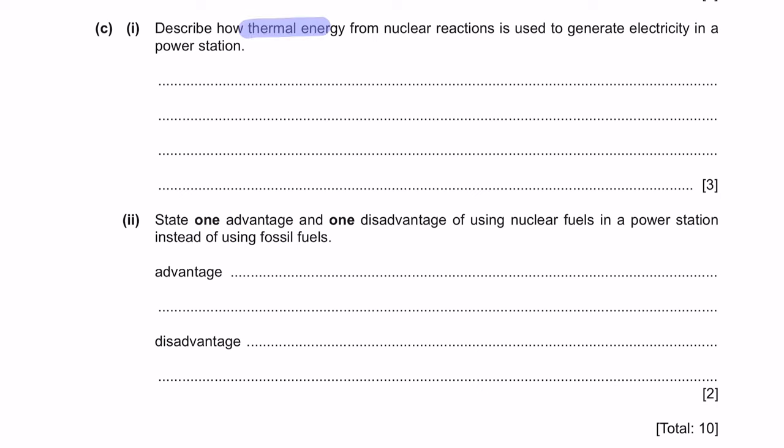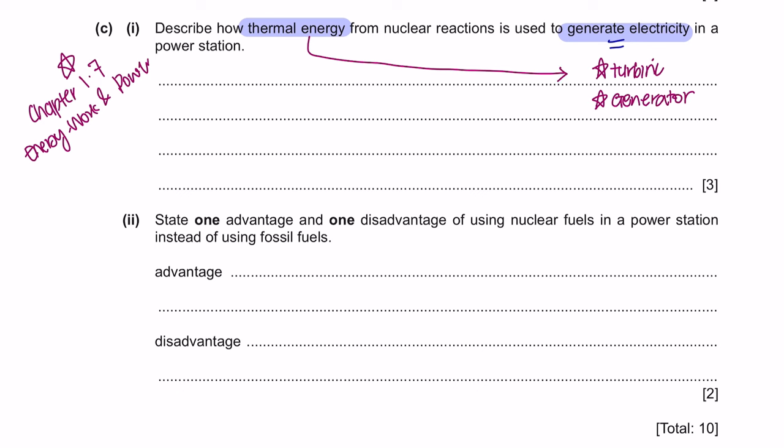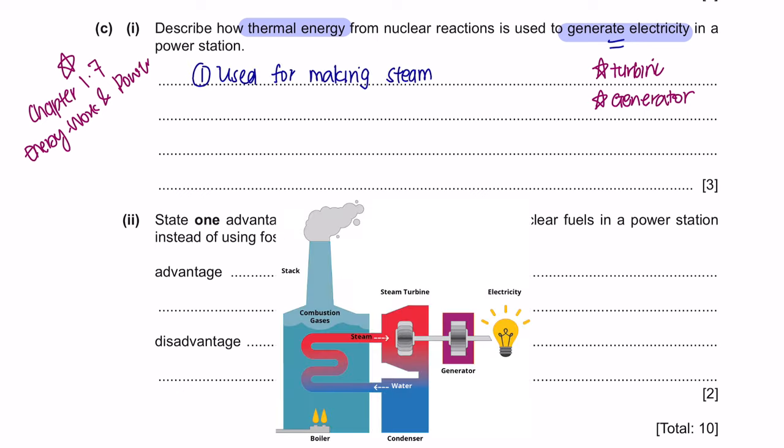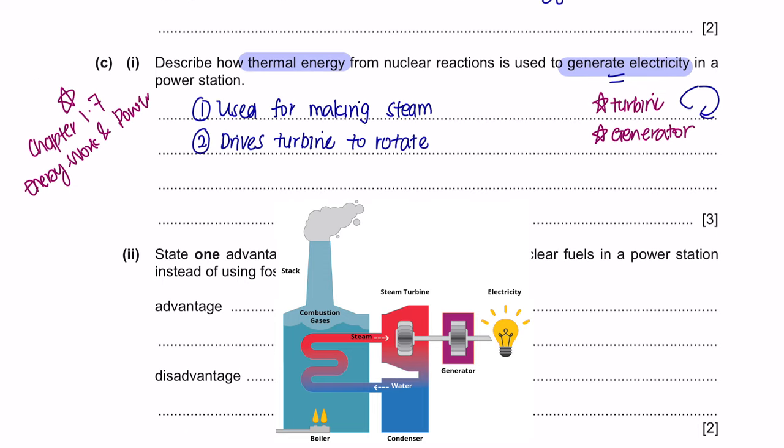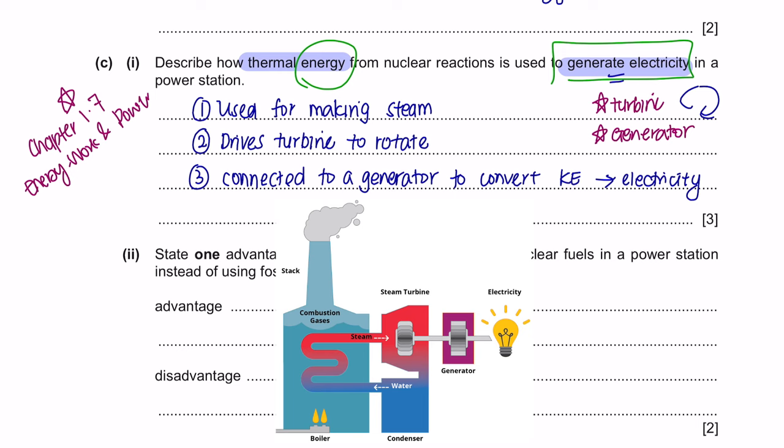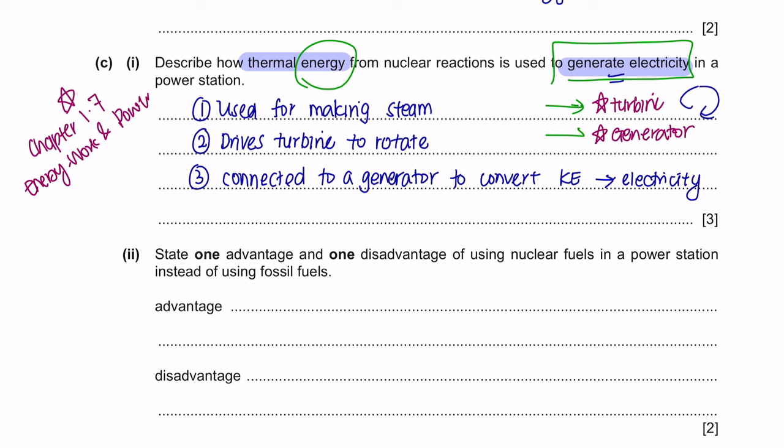Next, question C, part 1. Describe how thermal energy from nuclear reactions is used to generate electricity in a power station. This question is from chapter 1.7, Energy, Work and Power. Okay, so how does thermal energy used to generate electricity? Whenever we speak about generating electricity, the key points that you have to mention is the existence of turbine and generator. So, how does thermal energy help with the movement of the turbine? So, thermal energy can be used to boil water or make steam. Now, this steam produced is at very high pressure and it will drive the turbine to rotate. This turbine is now connected to a generator which will convert this kinetic energy into electricity. So, remember, anytime you are asked how a certain type of energy can be used to generate electricity, you always have to mention that you need to run a turbine that you can connect to a generator to convert the energy from the turbine into electricity.